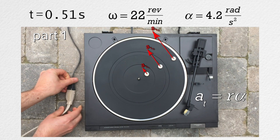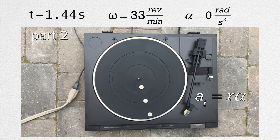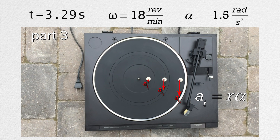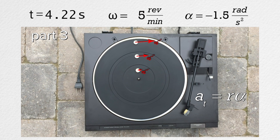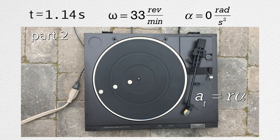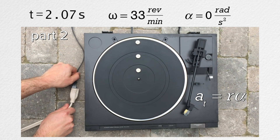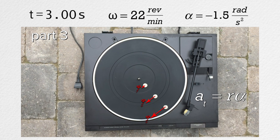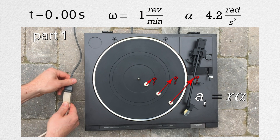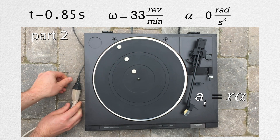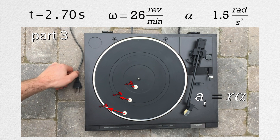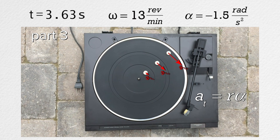This is because tangential acceleration equals radius times angular acceleration. During parts one and three, the angular accelerations are opposite in direction. And during part three, the angular acceleration is less than what it is in part one. And during part two, the angular acceleration of the turntable is zero. And just like the tangential velocities, the tangential accelerations are directly proportional to the radius of the path, which means the larger the radius of the path of the mint, the larger the magnitude of the mint's tangential acceleration. Well done, Bo.